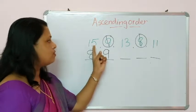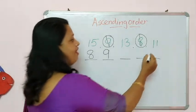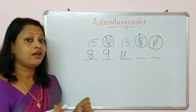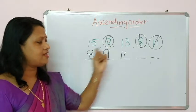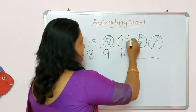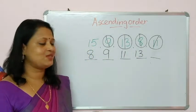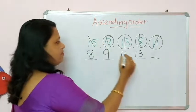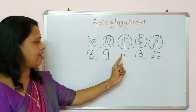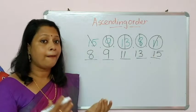Now from 15, 13, 11 — which is the smallest number? Right, 11. Cut this number and write it here. Now from 15 and 13 — which is the smallest number? Right, 13. Cut this and write it here. Now there is only 15 left, so cut 15 and write 15 here. So: 8, 9, 11, 13, 15. 8 is the smallest number and 15 is the biggest number.